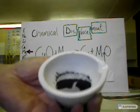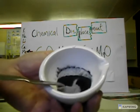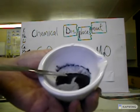I have here, in a mortar, a mixture of magnesium powder here, the grey powder, and copper oxide, the black powder.